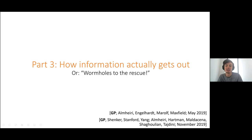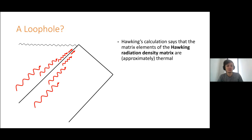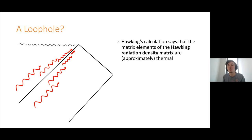There are a couple of papers: one by me and one by Almheiri, Engelhardt, and Maxfield, in May 2019. And then another round of papers in November 2019. Let's think again about Hawking's claim — he had this robust semiclassical approximation calculation that showed the Hawking radiation was in a thermal state. What he was actually calculating, if you really think about how his calculation works properly, is showing that if you compute some matrix element of the Hawking radiation density matrix, it looks thermal.